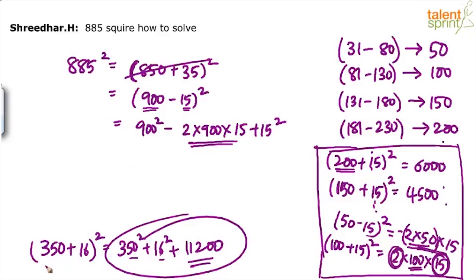So basically, you have to look at a as how many times 50? 1 times 50, 2 times 50, 3 times 50, 4 times 50.